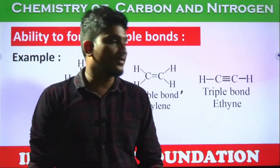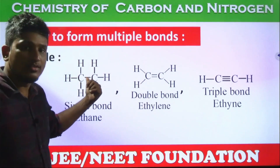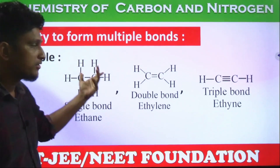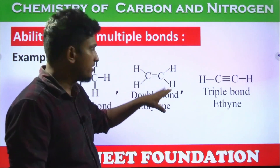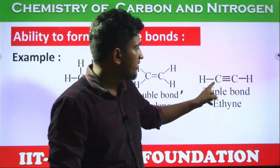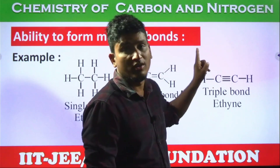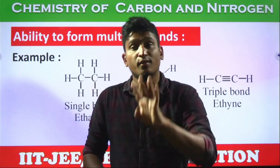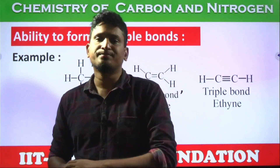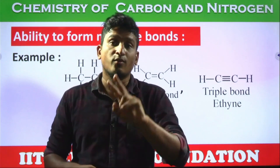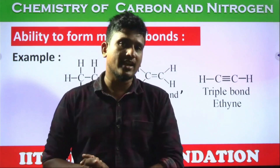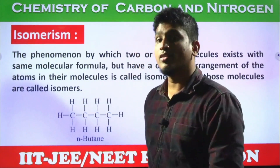In a single-bonded compound, check the total bonds for each carbon: one, two, three, four — four bonds. In the double-bonded compound ethylene or ethene: one, two, three, four for each carbon. In the triple-bonded compound: one, two, three bonds plus a fourth bond with hydrogen. Ultimately, each carbon always forms four bonds — that is the tetravalency. Carbon can form four single bonds, or one double bond and two single bonds, or one triple bond and one single bond.